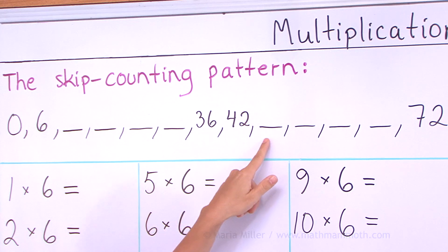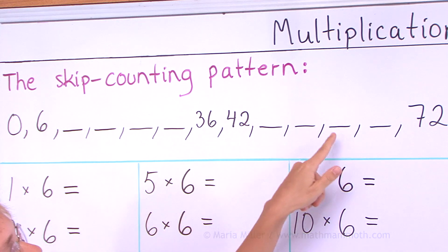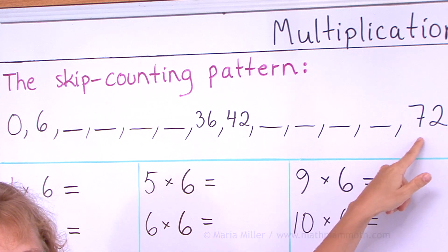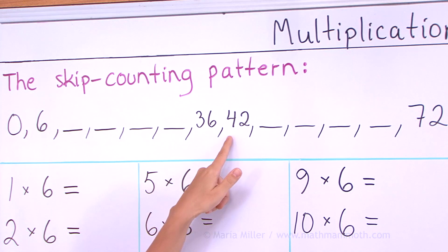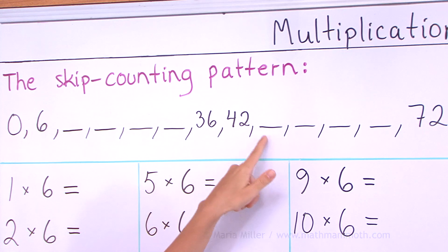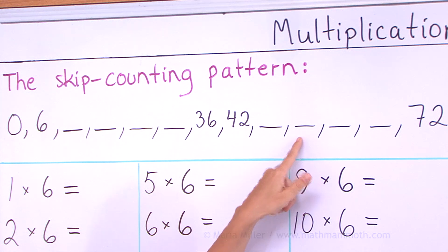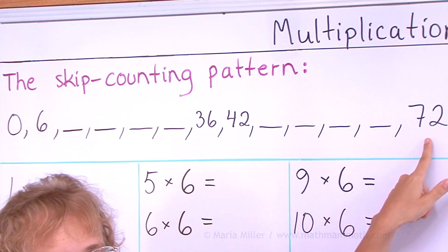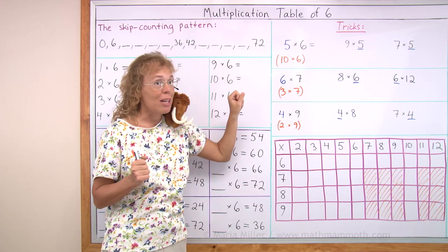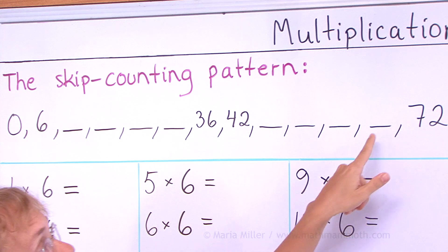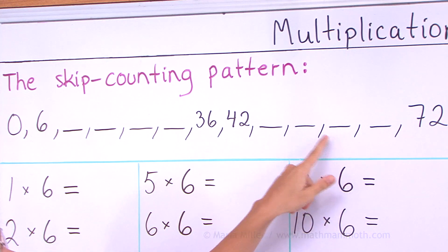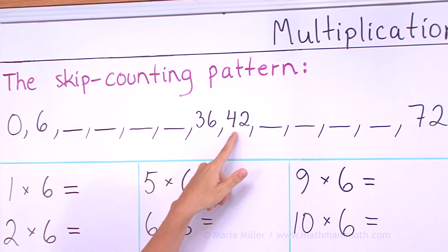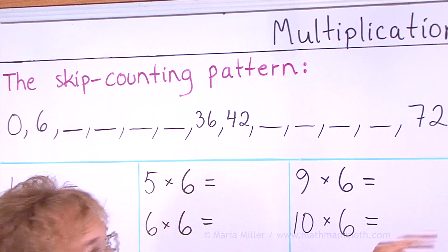One more time: 42, 48, 54, 60, 66, and 72. And your turn. And now we go backwards: 72, 66, 60, 54, 48, 42. And your turn.